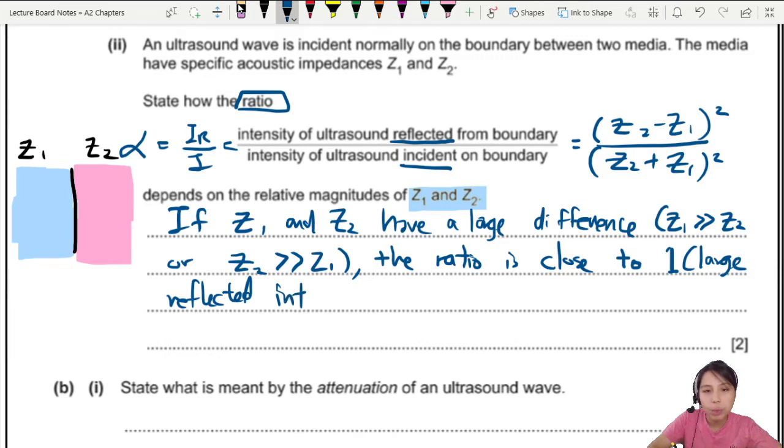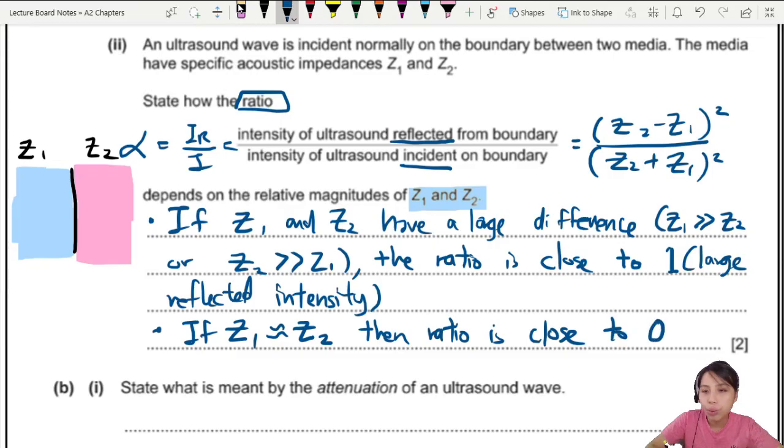Large coefficient. Alpha is 1. 1 is the biggest already. So large reflection. Large reflected intensity. Now the other one. If Z1 is very close to Z2. This is how we write it. Z1 is very close to Z2. Or we can say close in value. Then the ratio is very small. Very, very small. We say close to 0. In other words, this means there will be a very small reflected intensity when you're crossing a boundary. We send a wave through a boundary. So small reflected intensity.